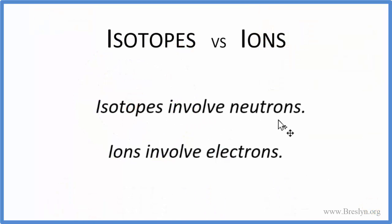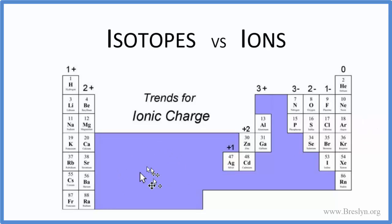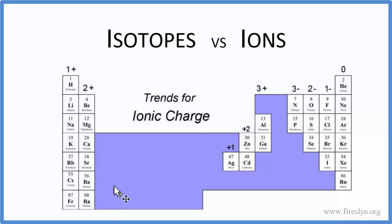So isotopes involve neutrons, and ions involve electrons. But isotopes have electrons, so they can lose or gain those to form ions. On the periodic table, there's a very clear pattern for ions: group one forms one-plus ions, group two forms two-plus, and so on. The transition metals — we really don't know their charge; we have to see what they're bonded to. But there's really no trend on the periodic table for isotopes. Many elements do have isotopes — in fact, tin has 10 — but we don't have a clear trend for isotopes like we do with ionic charge.